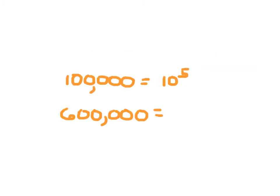As the numbers get larger, the process is still very much the same. Remember that 10 to the fifth power is 100,000. So 600,000 — we take the 6 and just multiply by 10 to the fifth power.